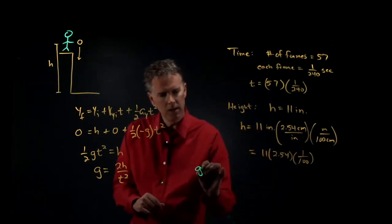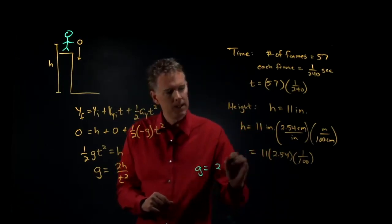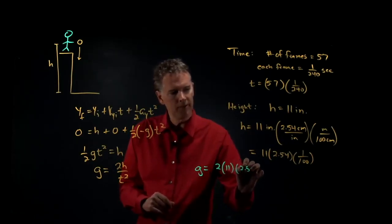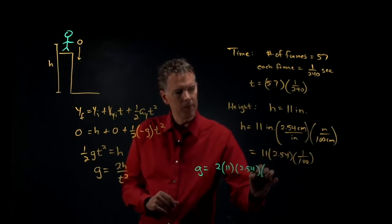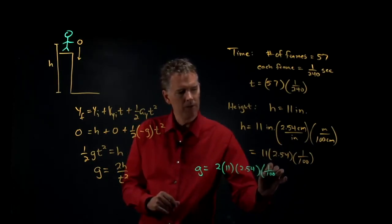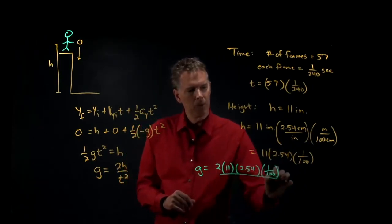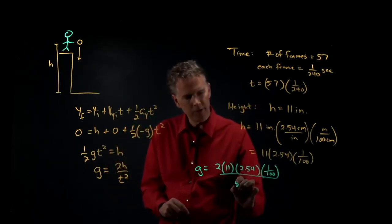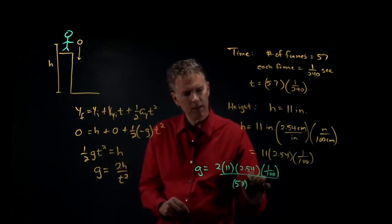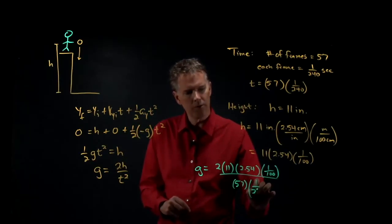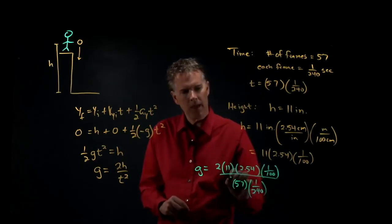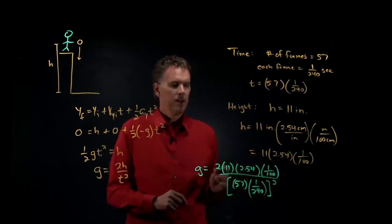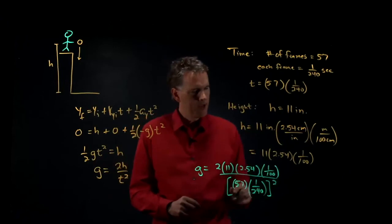We get g is equal to 2 times 11 times 2.54 times 1 over 100. And then we're going to divide by t squared, which is 57 times 1 over 240. That whole thing is squared. Plug this into your calculator and tell me what you get.